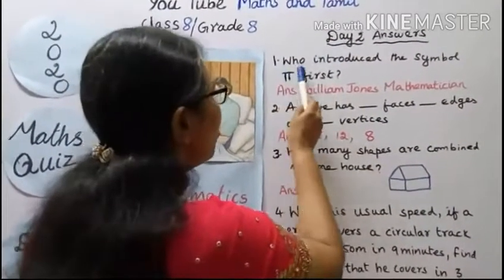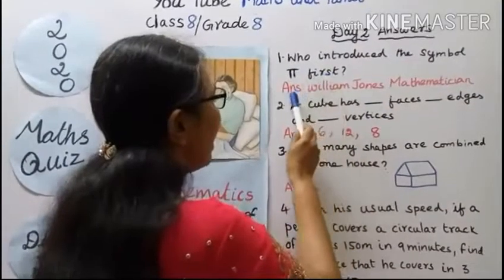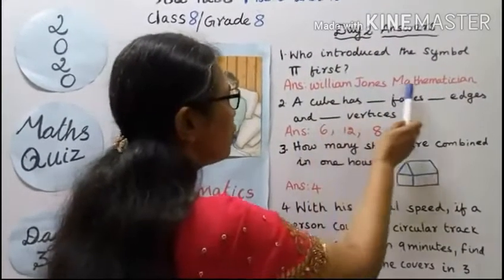First question, who introduced the symbol π first? Answer: William Jones, Mathematician.